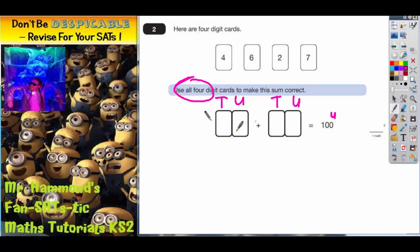These two. Now it doesn't matter which way you put them round, so we'll just put the 4 in there and the 6 in there, but it could be the other way round, as long as they're in the units column.